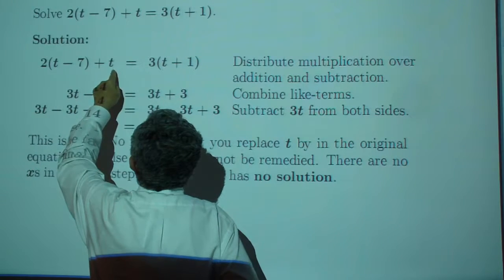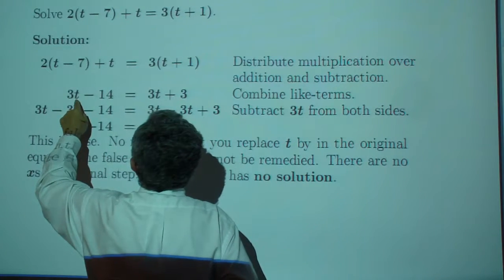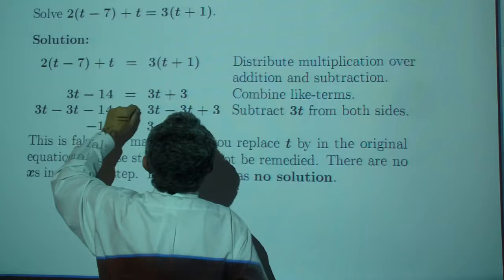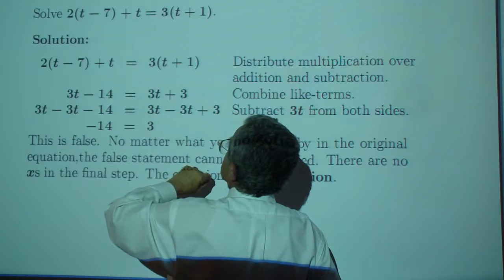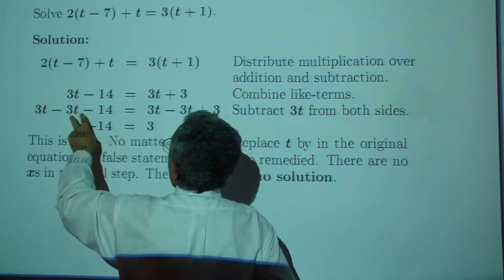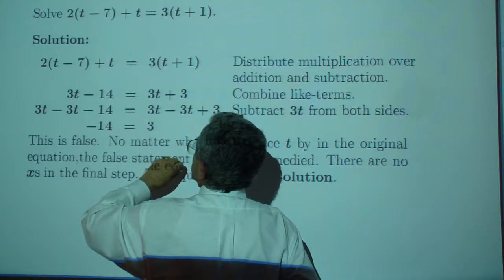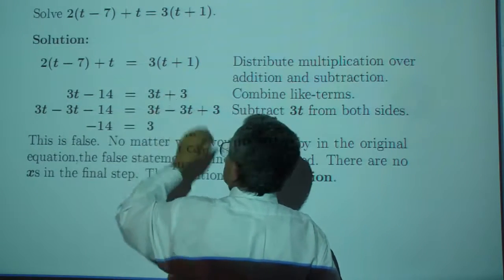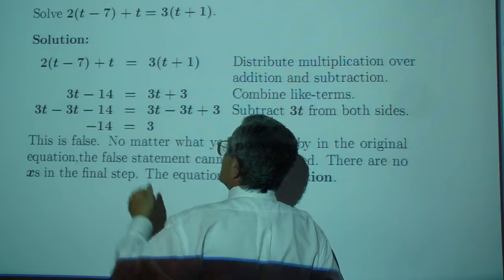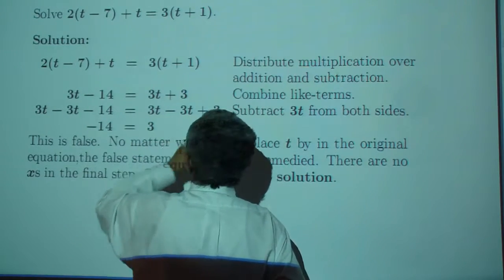Distribute and add combined like terms. It gives you 3t minus 14, which is 3t plus 3. So we'll subtract 3t from both sides. The 3t's drop out, you're left with negative 14, which is 3.